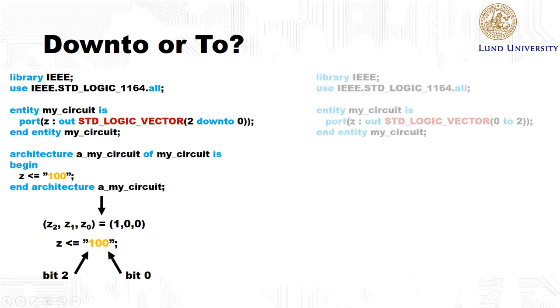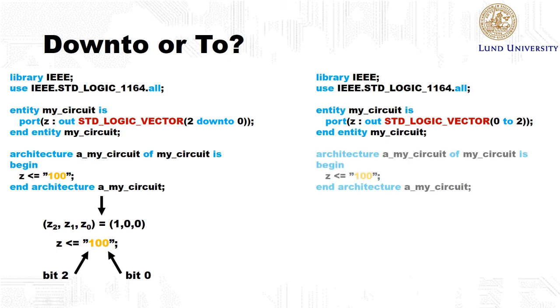The other way to declare a signal vector is to use the keyword to instead. So here we set the width to 0 to 2. And now we assign the same value to set as in the previous example. The difference here is that bit number 0 will be set to 1 this time. And the other ones will be set to 0. So the way the bits counts are reversed in this case. So bit number 2 is the rightmost bit. And bit number 0 is the leftmost bit.